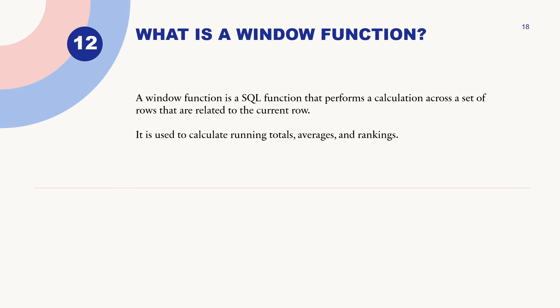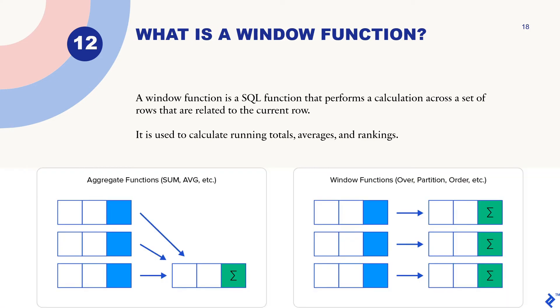What is a window function? A window function is an SQL function that performs a calculation across a set of rows that are related to the current row. It is used to calculate running totals, averages, and rankings. Aggregate functions are normal functions like SUM and AVG, whereas window functions use OVER, PARTITION, and ORDER. Aggregate functions get aggregated on one single column, whereas window functions keep it separate on its operation.